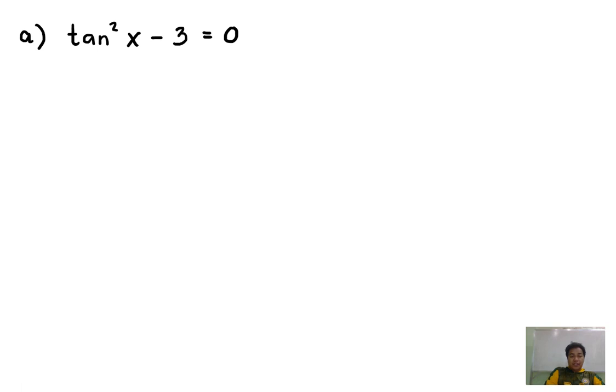So how do we solve for tangent x? We need to transpose negative 3 to the other side of the equation. This will become tangent squared x equals 3. And then we have to eliminate the square. So we take the square root of both sides. Therefore tangent x equals square root of 3.